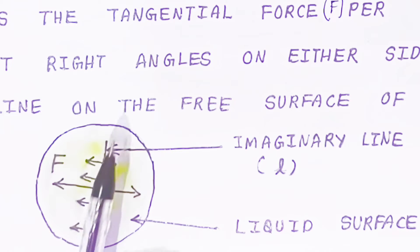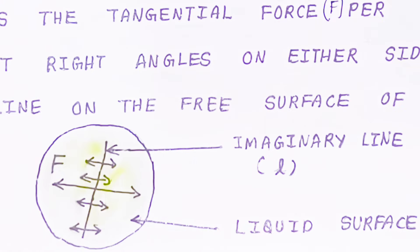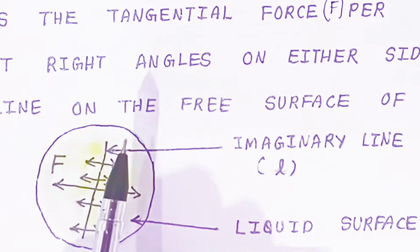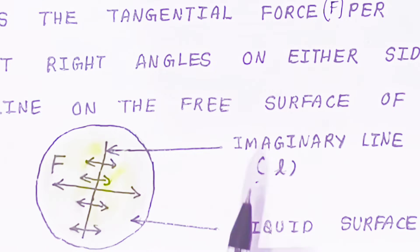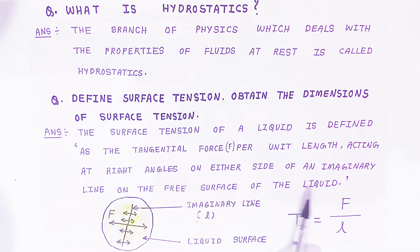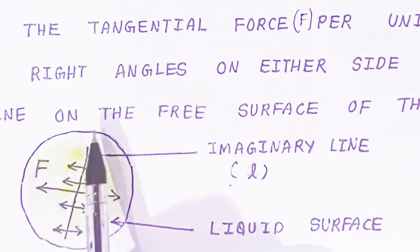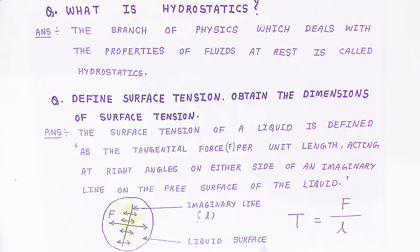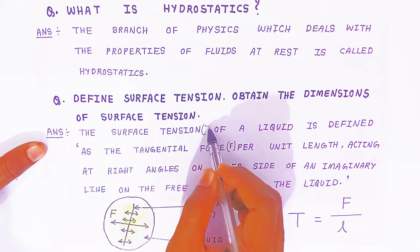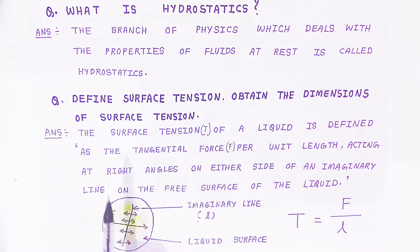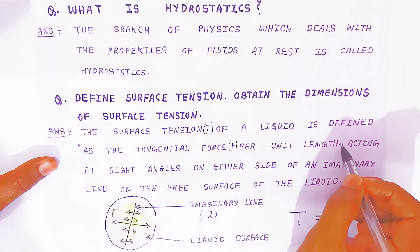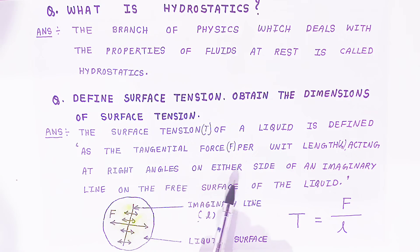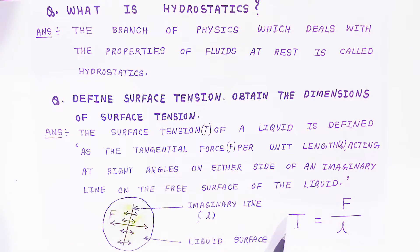On the liquid surface we draw an imaginary line of length l. The force acts tangentially on this imaginary line on the free surface of the liquid. Force per unit length is called surface tension. Surface tension is represented by capital T. So surface tension T = F/l — tangential force per unit length acting at right angles on either side of the imaginary line on the free surface of liquid.